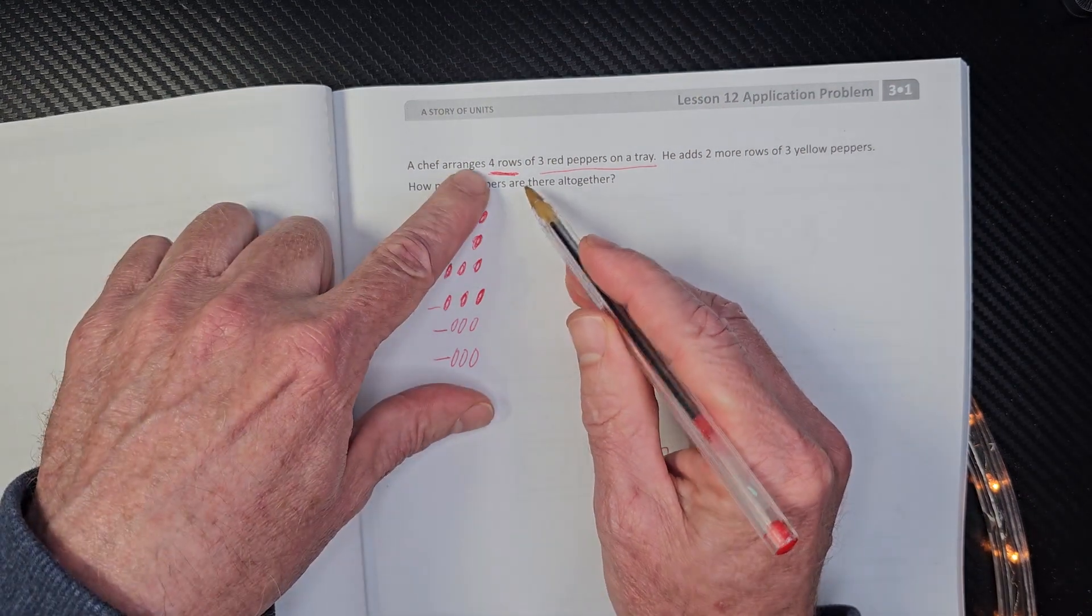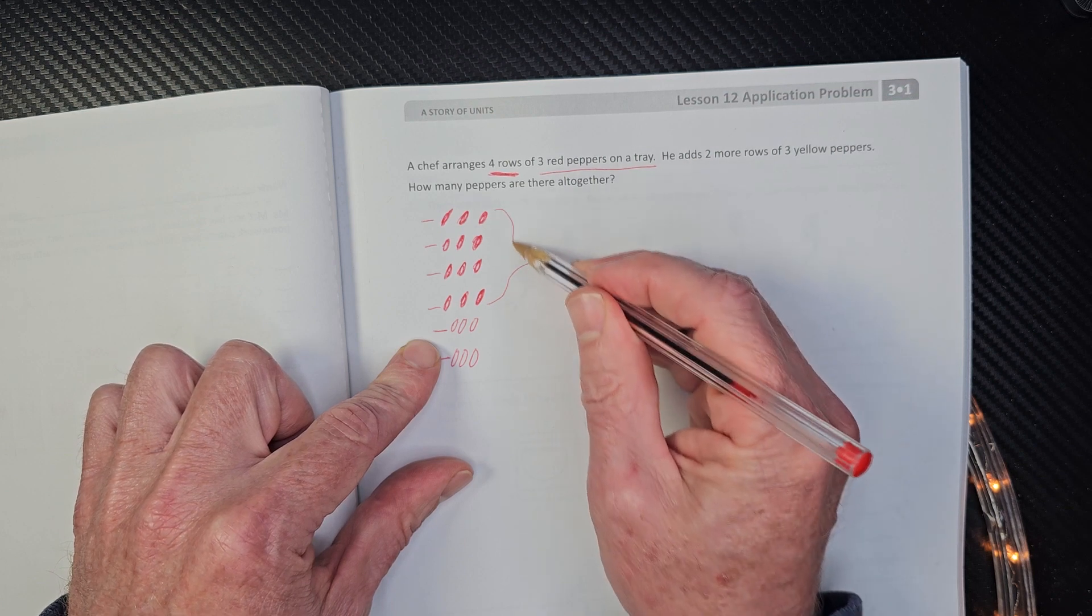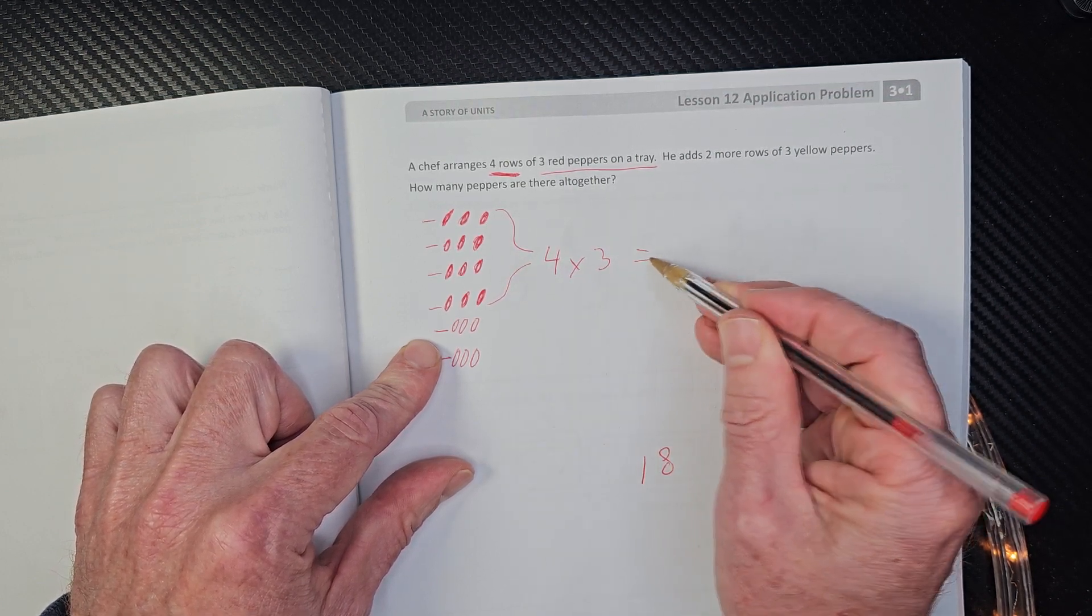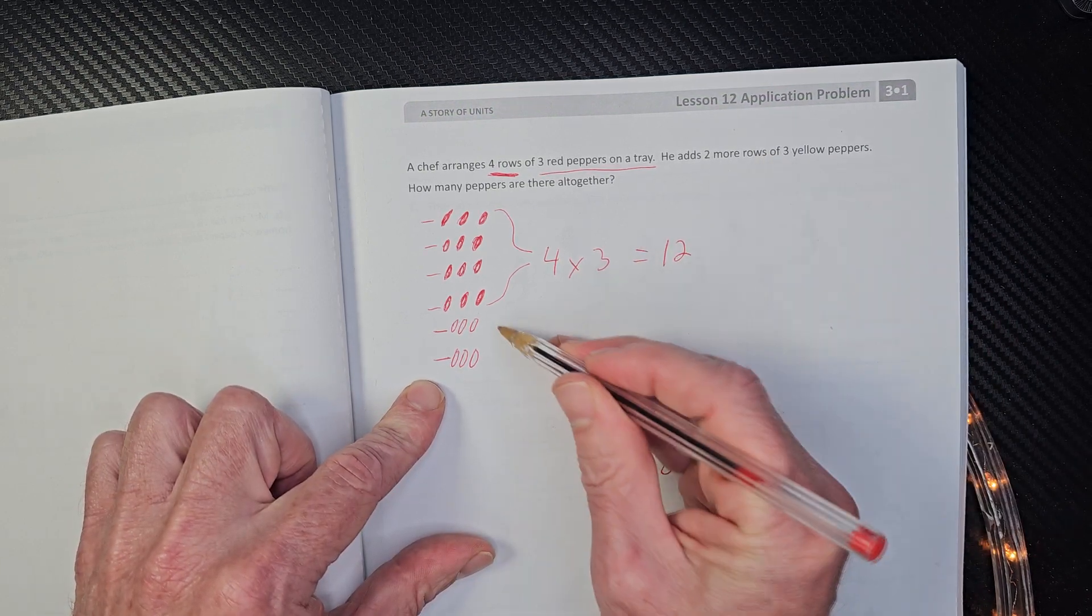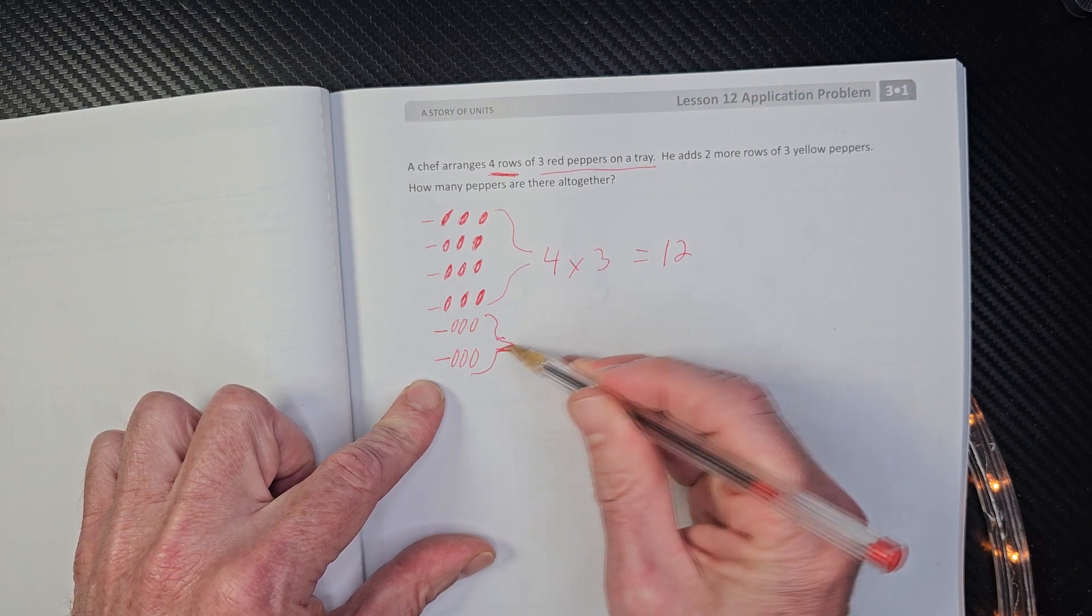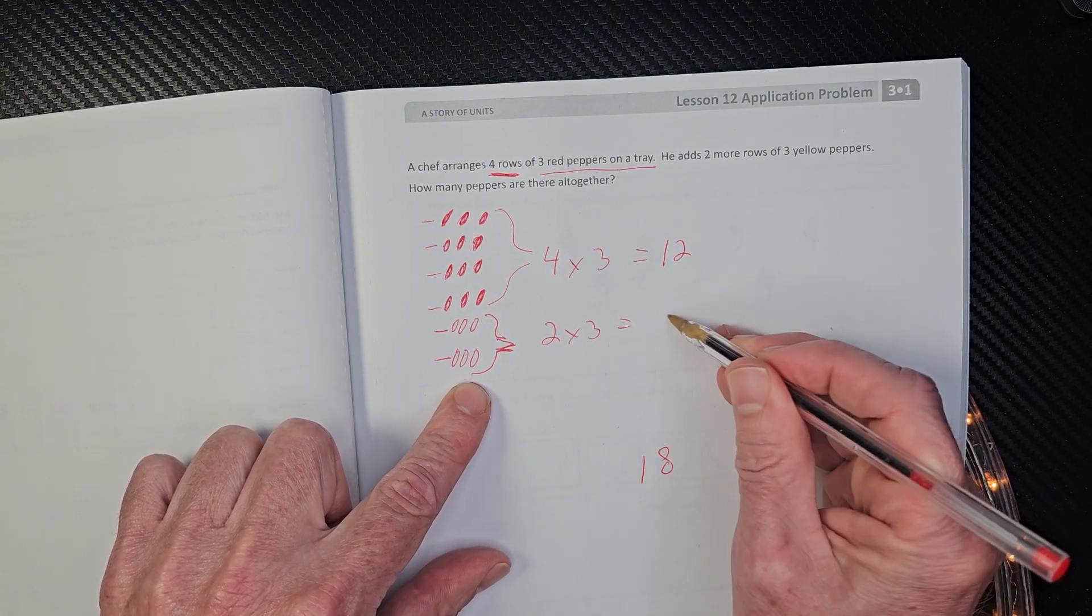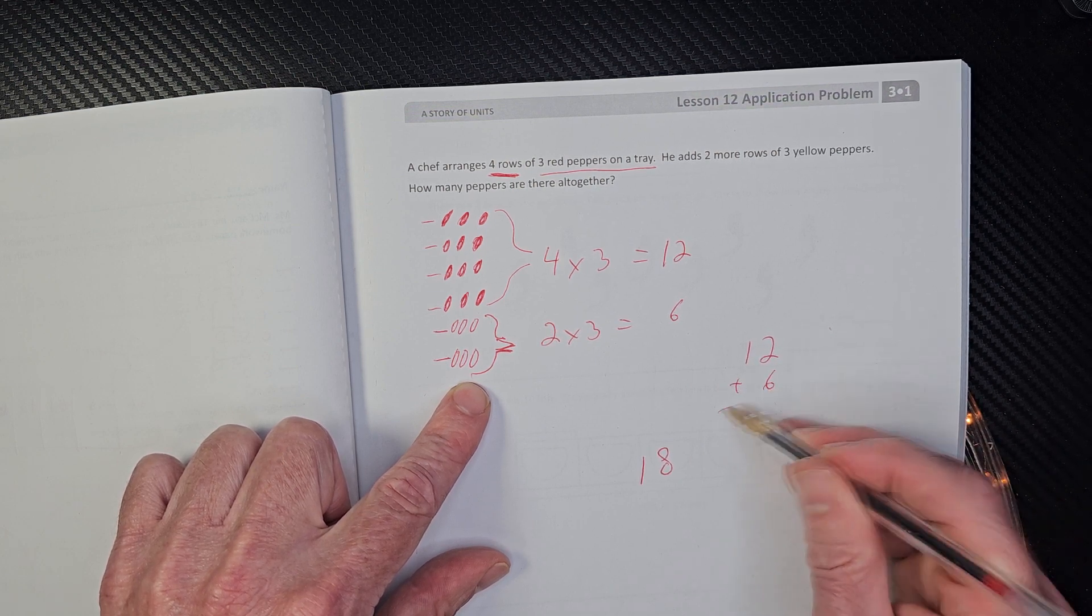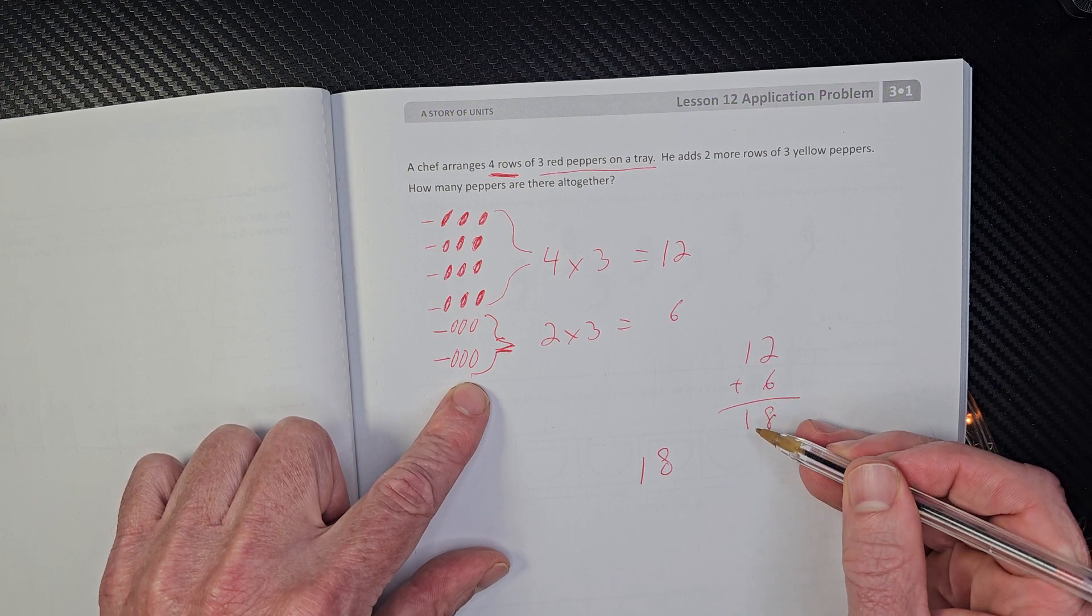Now, if you wanted to, you could take four rows of three red peppers right here. And that would be four times three would equal 12. And then two more rows of three - that would be two times three, that would equal six. And 12 plus six - six plus two is eight, carry the one - write it down.